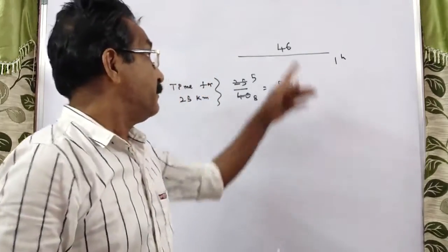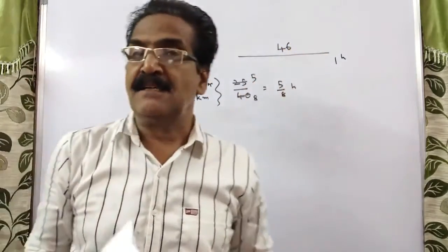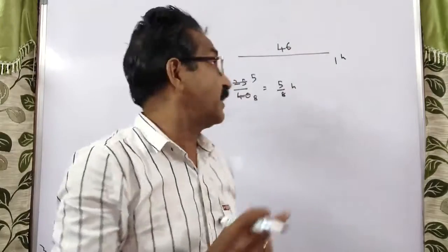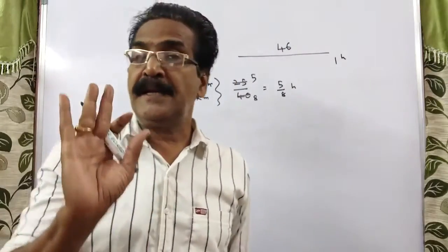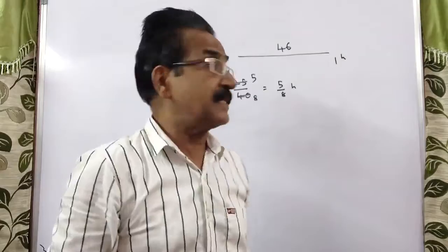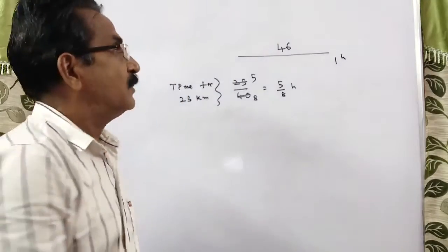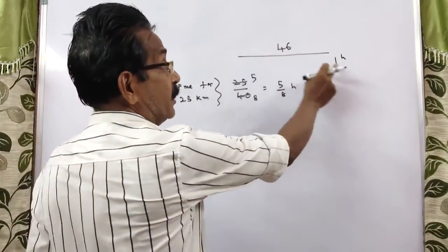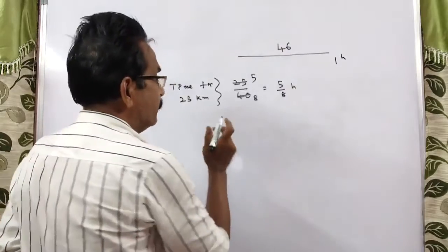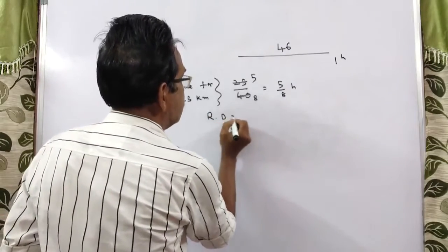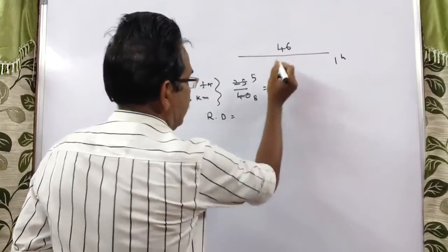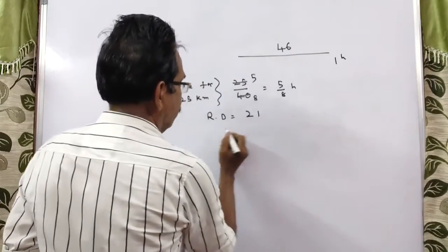So the remaining distance: 46 minus 25. Remaining distance is 21 kilometers. The train has to cover the 46 kilometers in one hour total. So remaining distance is equal to 46 minus 25, which is 21.